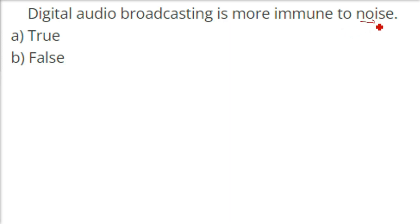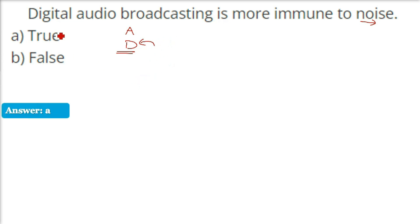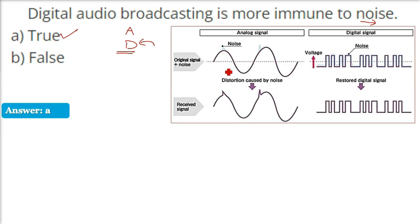Digital audio broadcasting is more immune to noise. Digital audio offers superior sound sample rate, bit rate, and quality compared to analog. With analog signals — like early telephone calls — there was a lot of noise, but digital communication has much less or no noise. The answer is that digital audio broadcasting is more immune to noise.